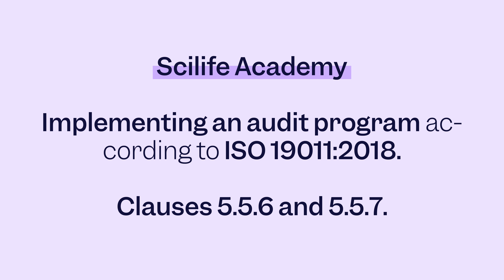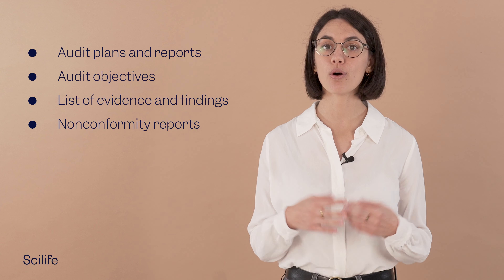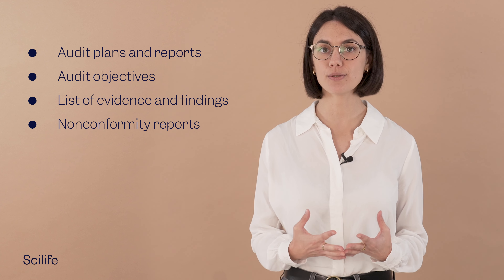Let's discuss audit records related to each audit. There are records related to each individual audit within the program. Audit plans and reports detail how the audit will be conducted and also summarize the results. The objectives of each audit clearly state what you intend to achieve with each audit. The list of evidence and findings is a comprehensive record of the evidence collected during the audit and the findings derived from the evidence. Nonconformity reports contain all findings that do not meet the established standards, requirements, specifications or expectations.